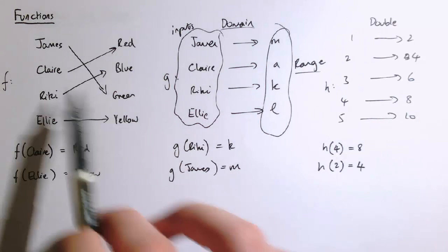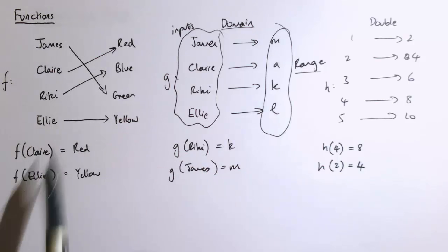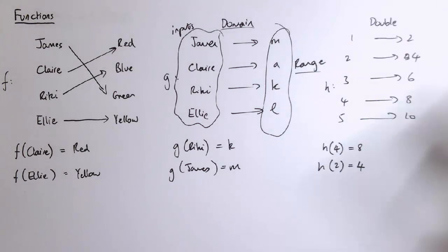In these examples we had people's names to their favorite colors. The names were the domain and the colors were the range. Let's think about that in the context of some mathematical or numerical examples.